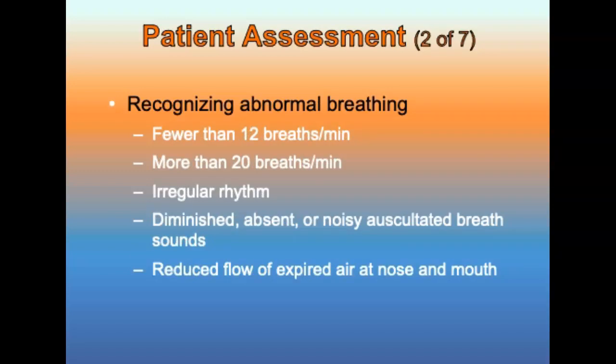Recognizing abnormal breathing: an awake, alert adult who is talking to you usually has no immediate airway and breathing problems. Always have supplemental oxygen and a BVM or pocket mask close at hand. Signs of abnormal breathing include fewer than 12 breaths per minute, more than 12 breaths per minute in the presence of shortness of breath (dyspnea), irregular rhythm, diminished, absent, or noisy auscultated breath sounds, or reduced flow of expired air at the nose and mouth.